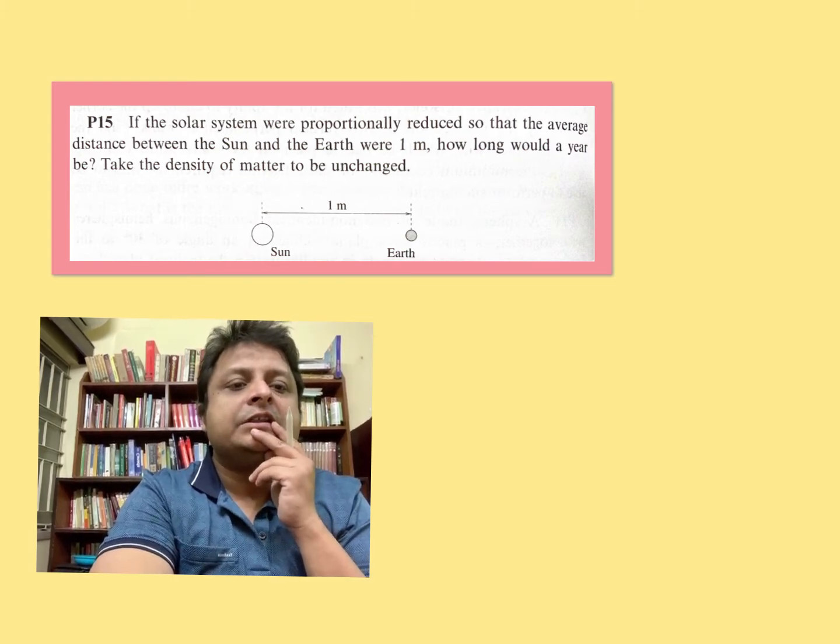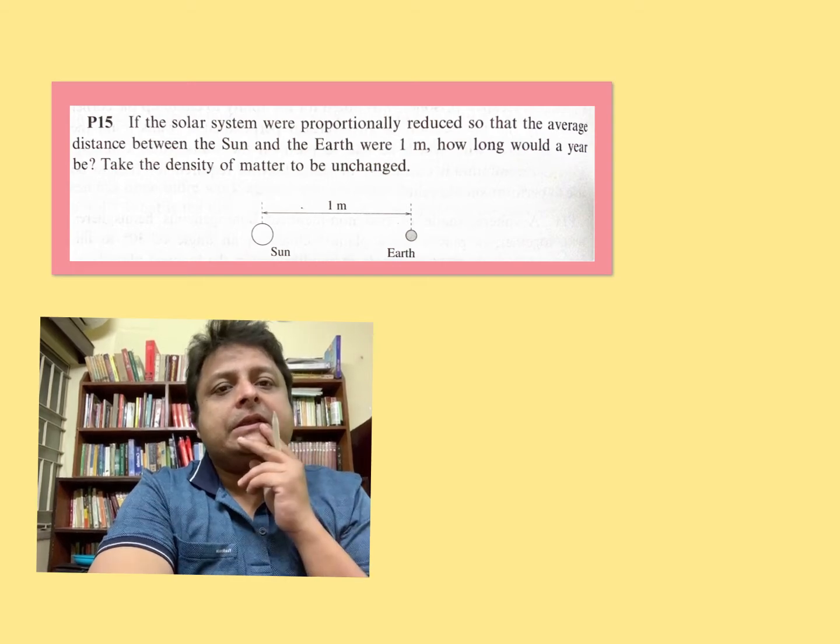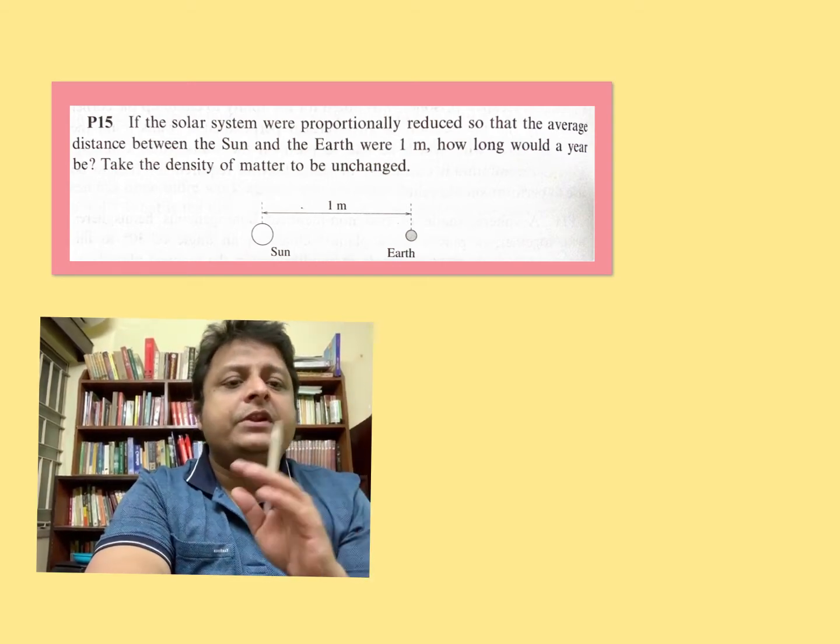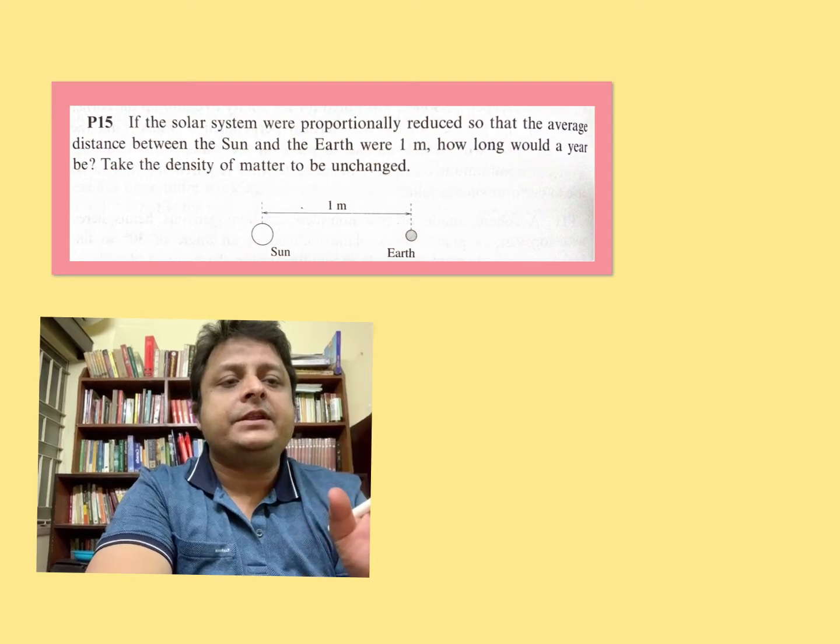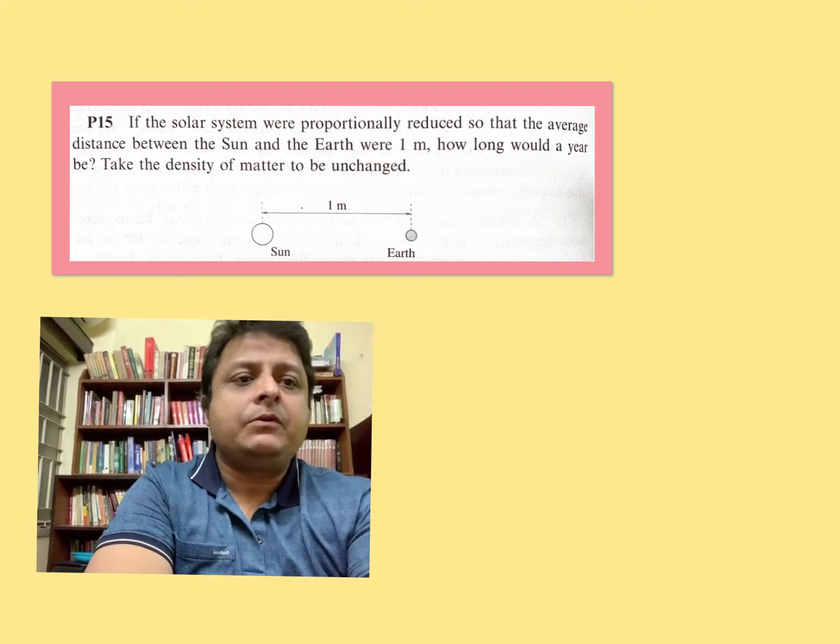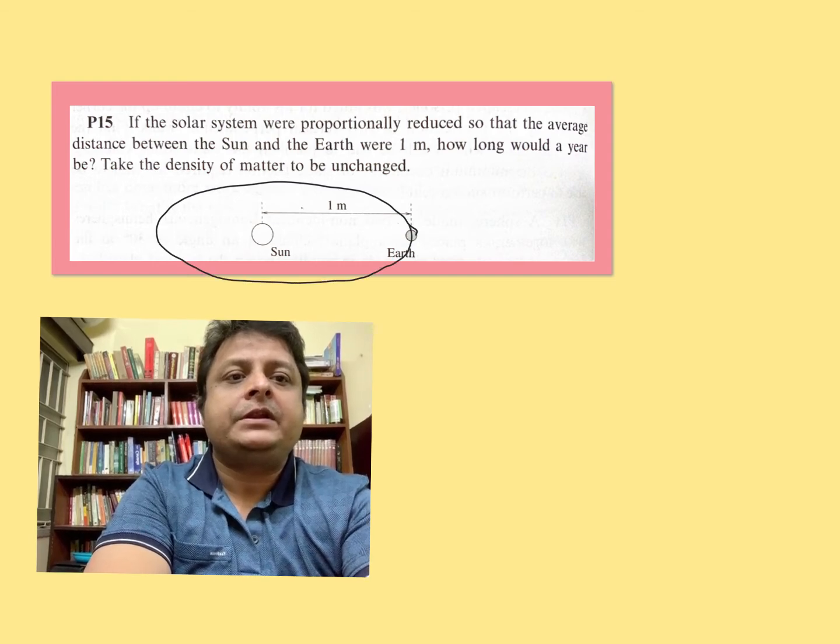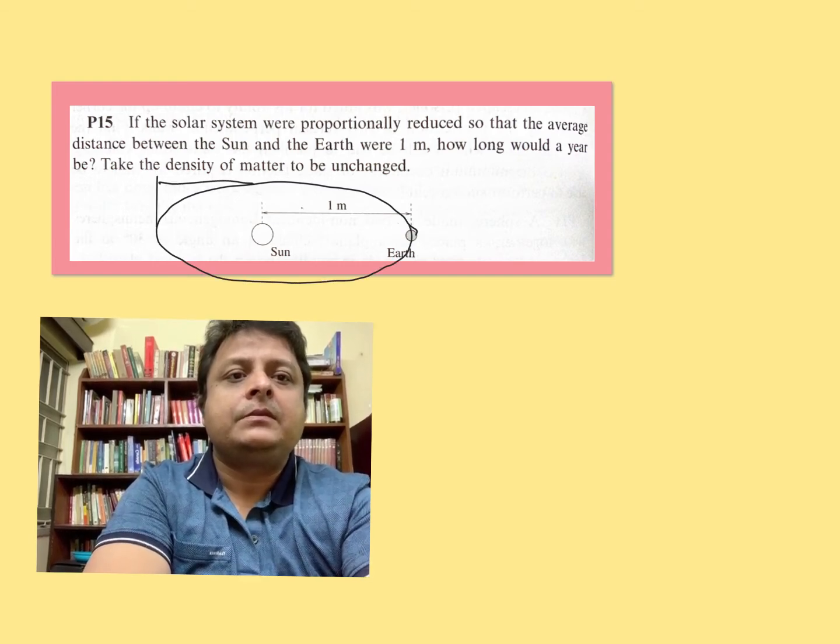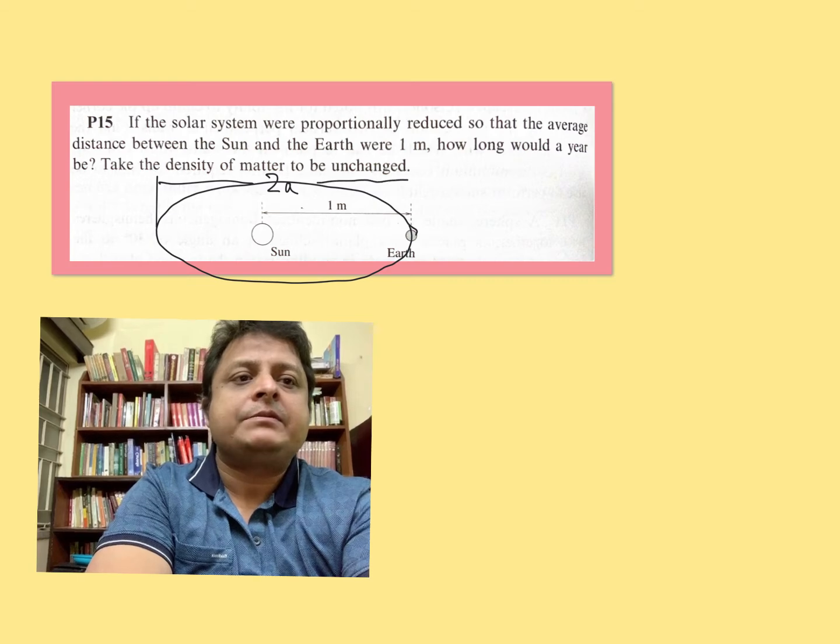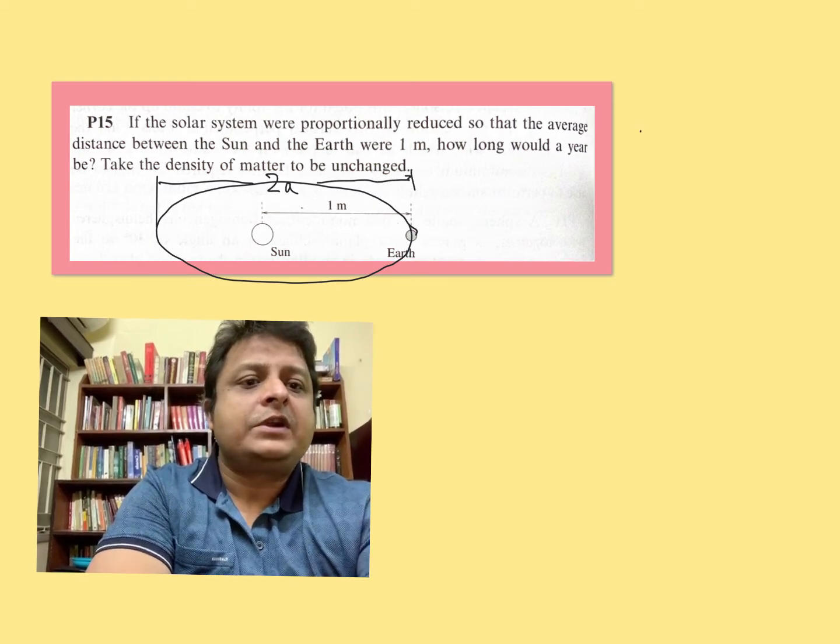See, everything is proportionately reduced. Suppose if I draw the orbit, and the major axis length happens to be 2a, then what is the formula for time period?